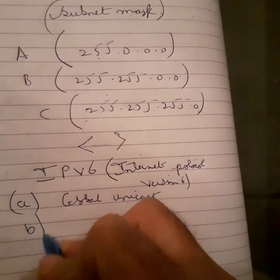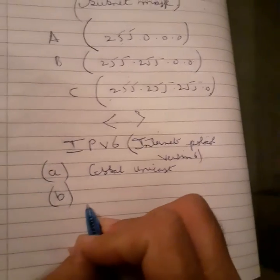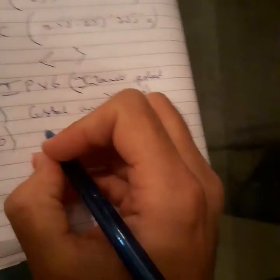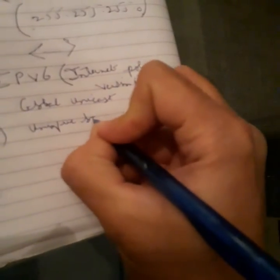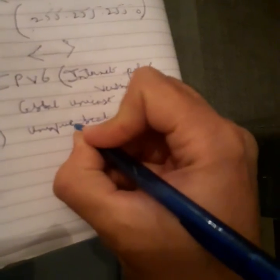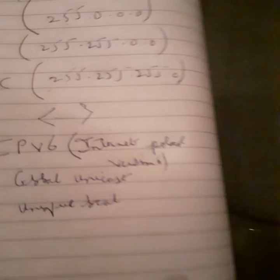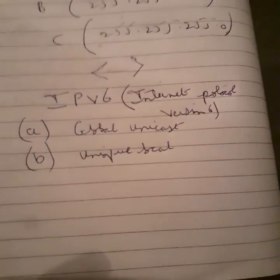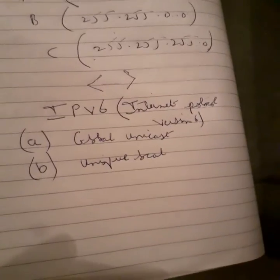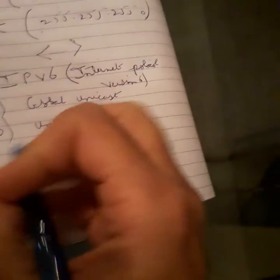And then we have Unique local address. Unique local. I hope my writing isn't getting too bad. So, global Unicast address. Unique local address. And then we have link local address.